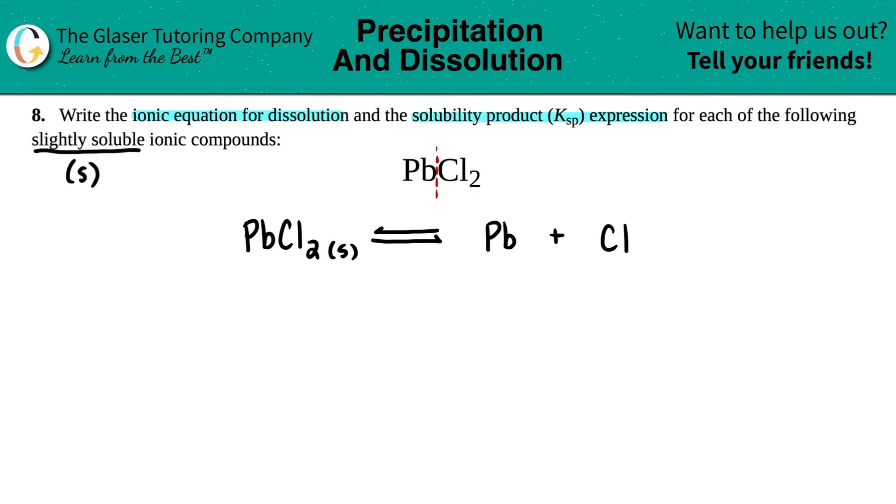to have the charges, but you could use the crisscross rule. There was only one Pb and two chlorines. This one crisscrosses up, telling me that the chlorine was supposed to be a negative one charge, so Cl⁻. And then this two crisscrosses up to the lead or the Pb, telling me that this was a plus two, so Pb²⁺.